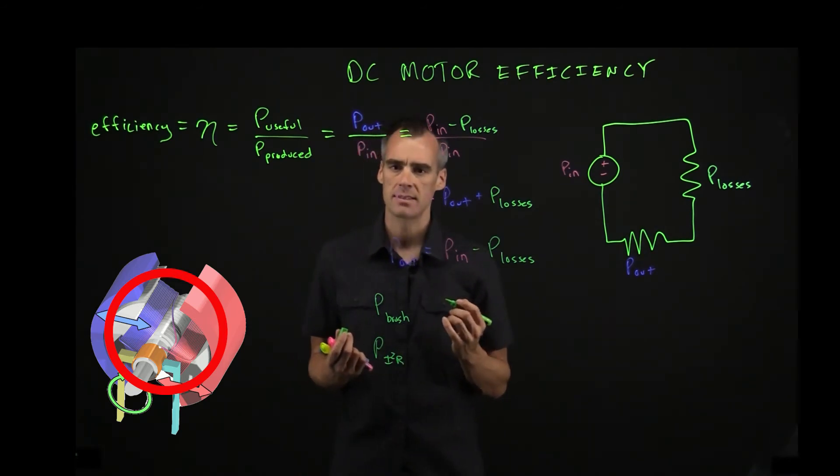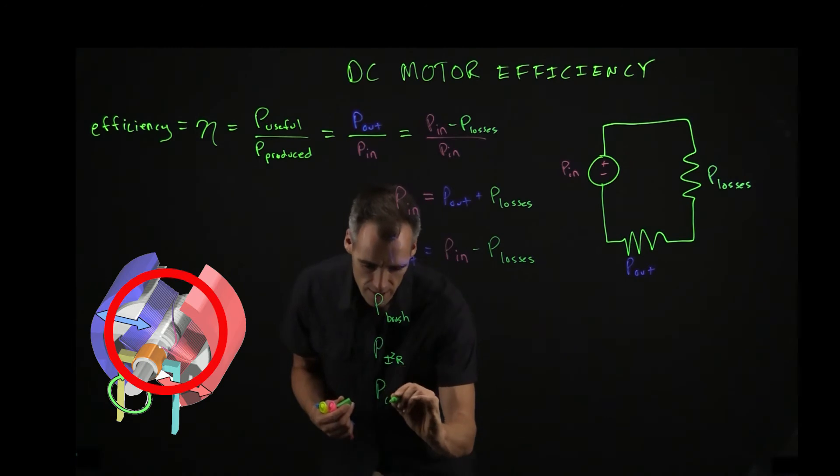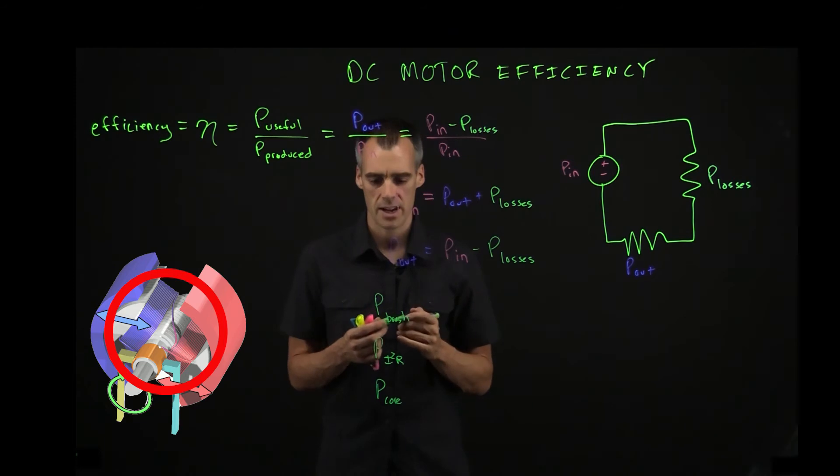And another type of loss in this case is just going to be an electromagnetic loss from the core. So that electric field is emanating outwards and there's some electromagnetic effects that we're going to lose a little bit of that energy.